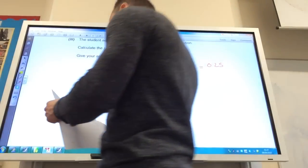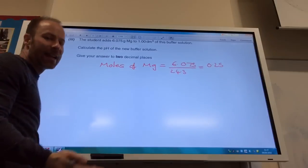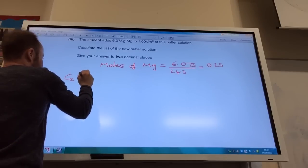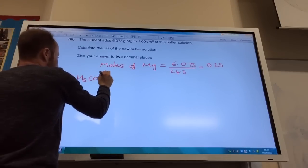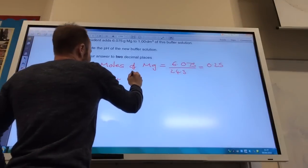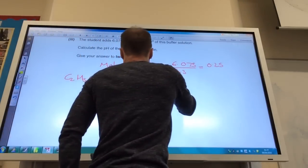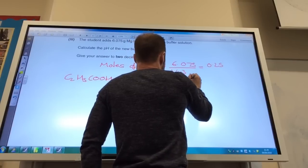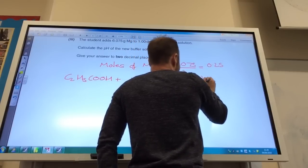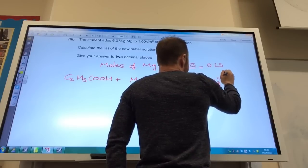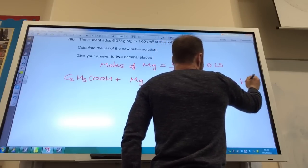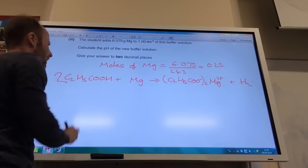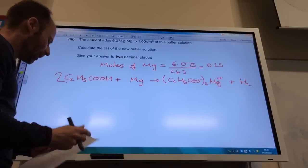So now we need to think about how will that actually react. So magnesium will obviously react with the propanoic acid. So we've got propanoic acid, C2H5COOH, will react with magnesium to give me magnesium propanoate which is C2H5COO minus. But I've got two of those because obviously magnesium is Mg2 plus plus H2. So I need two of those so I need two of those to get that to work.